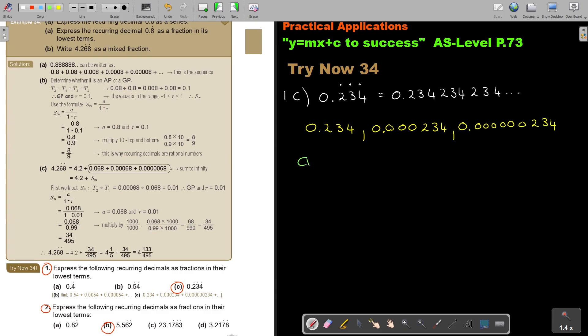Now if I want to find the value of A, it's 0.234. The value of R is, this is term 1, this is term 2, this is term 3. So if I say term 2 divided by term 1, so it's 0.000234 divided by 0.234. And if I press that on my calculator, I get 0.001.